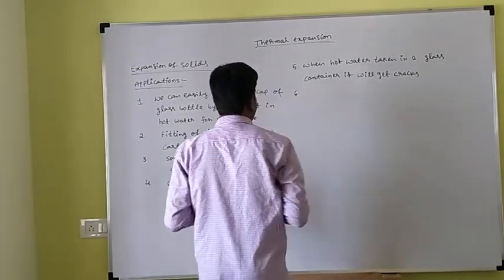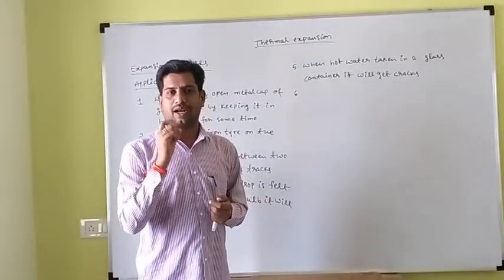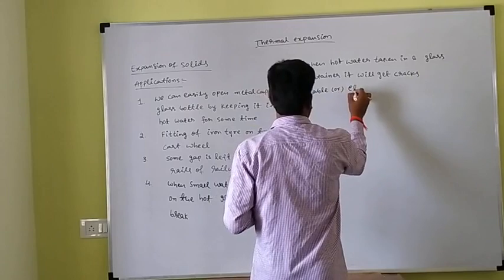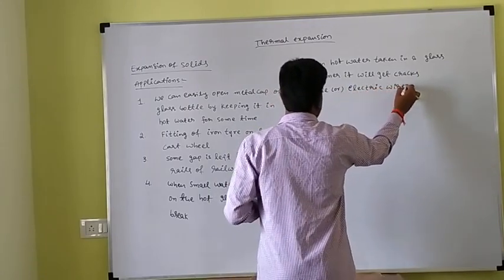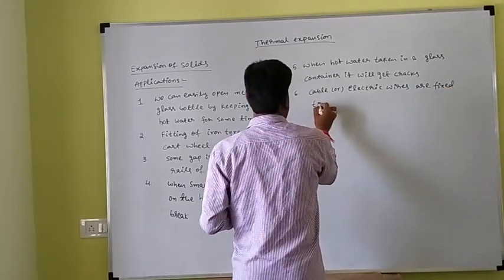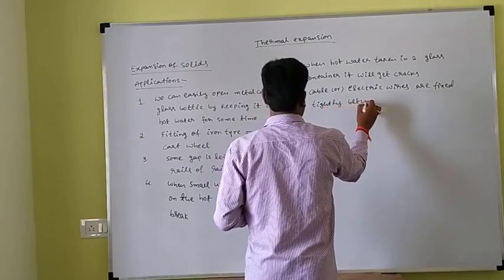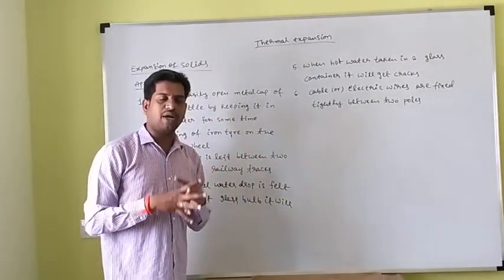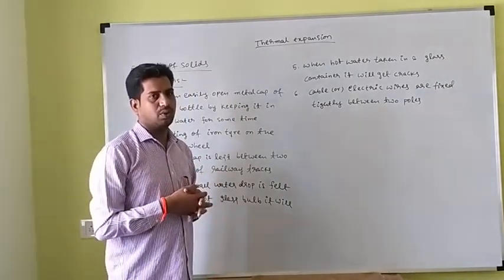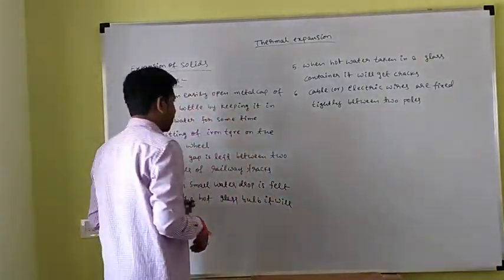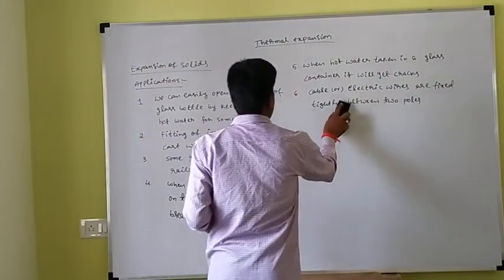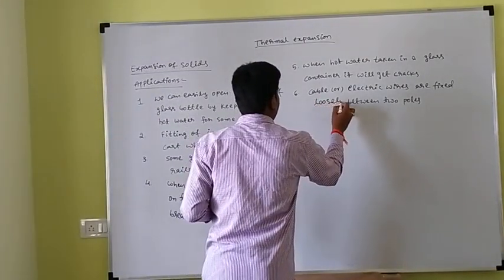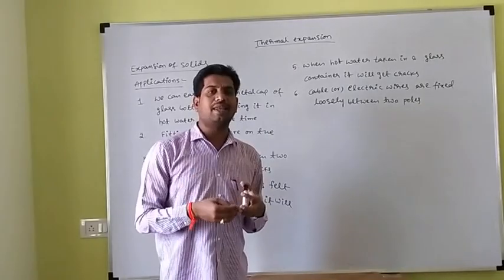The next application is when we fix cable or electric wires between two poles. They are not fixed tightly — some sag is left — they are fixed loosely between the two poles to allow linear contraction in winter.